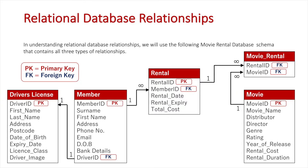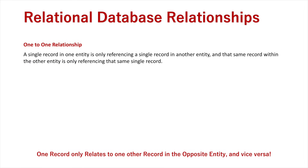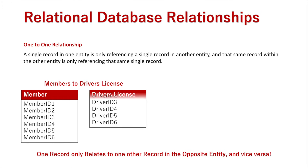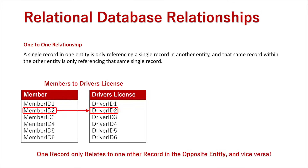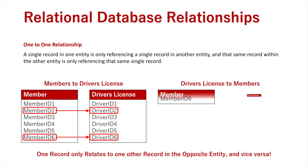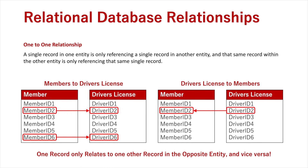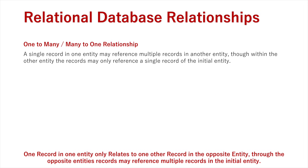Let's look at what these relationships look like at the record level. In a one-to-one relationship, a single record in one entity only references a single record in another. For example, member id2 only references driver id2, and member id6 only references driver id6. On the flip side, driver id2 only references member id2 and driver id6 only references member id6 — one record referencing exactly one record in the other entity.